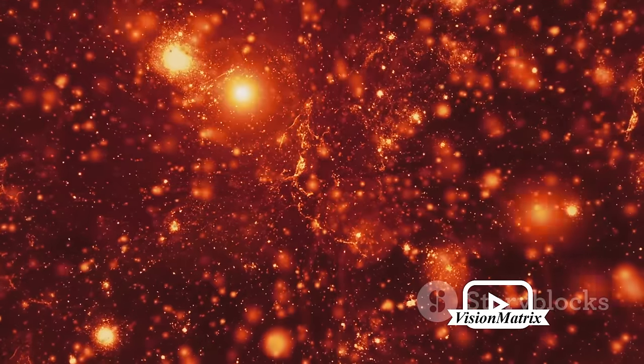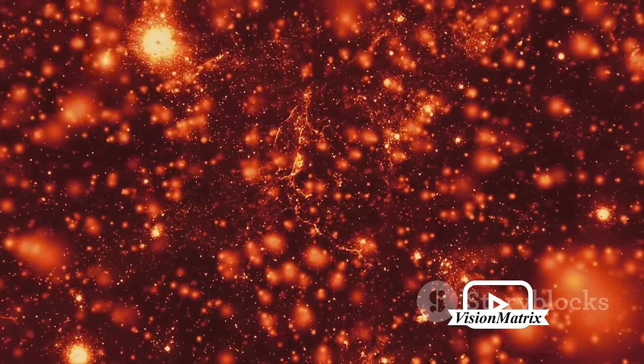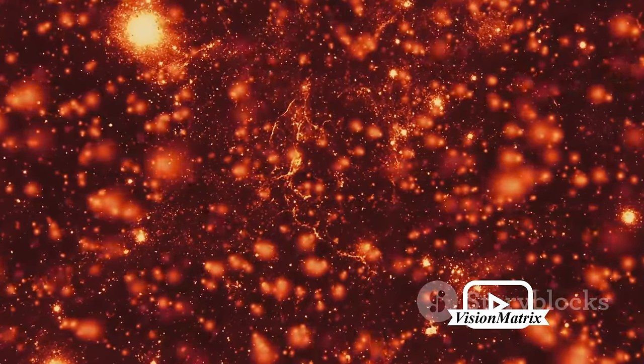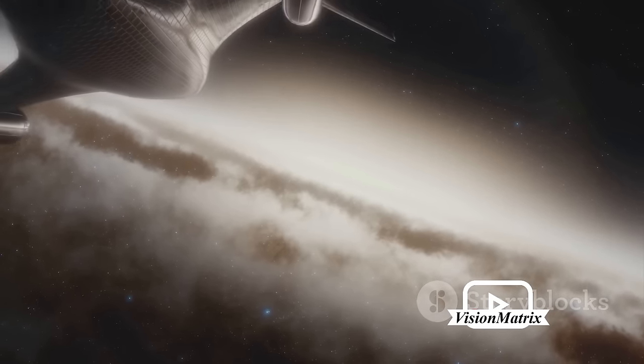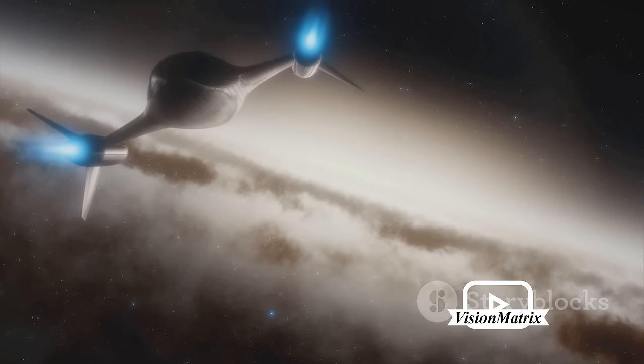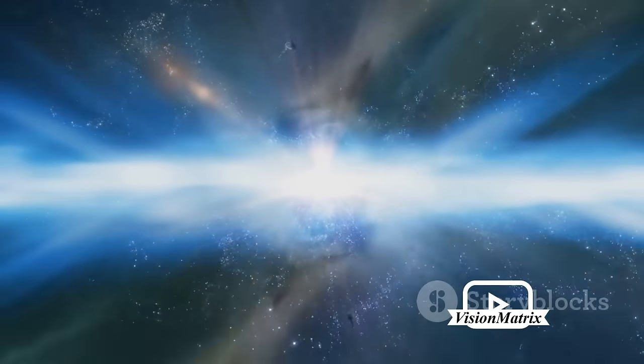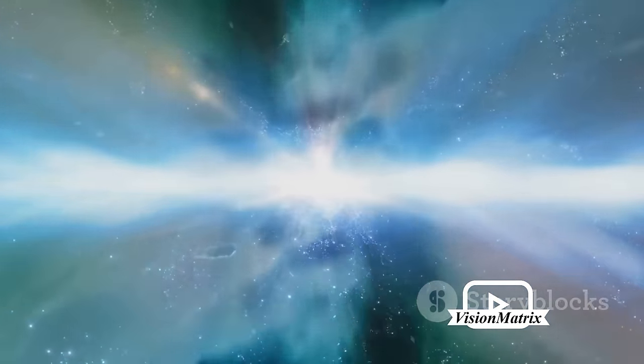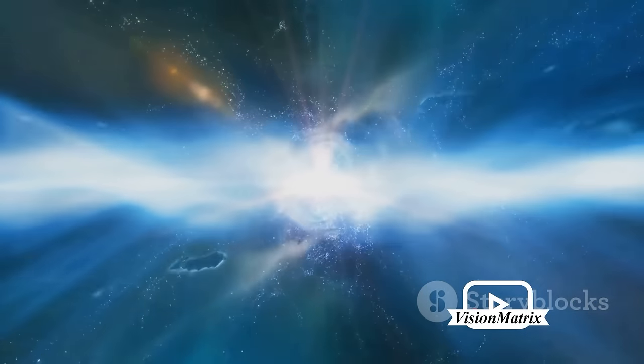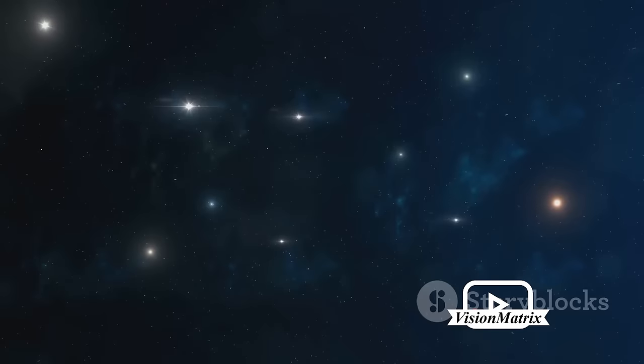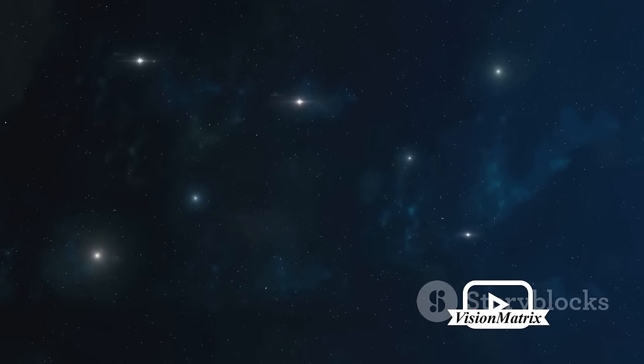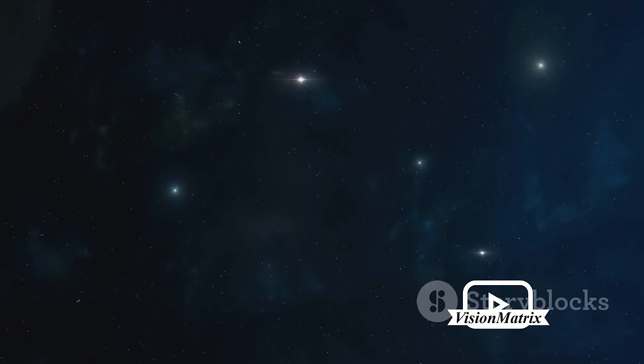As stars age, they eventually exhaust their nuclear fuel. The fate of a star is determined by its mass. Some explode in spectacular supernovae, their violent death seeding the universe with the elements necessary for life. Others, however, collapse into themselves, forming incredibly dense objects known as black holes. And what of the galaxies themselves? Their life cycle is also dictated by the laws of the cosmos. Some galaxies, through gravitational interaction, merge with others to form larger structures. Others may be torn apart by the same forces, their stars scattered across the universe.